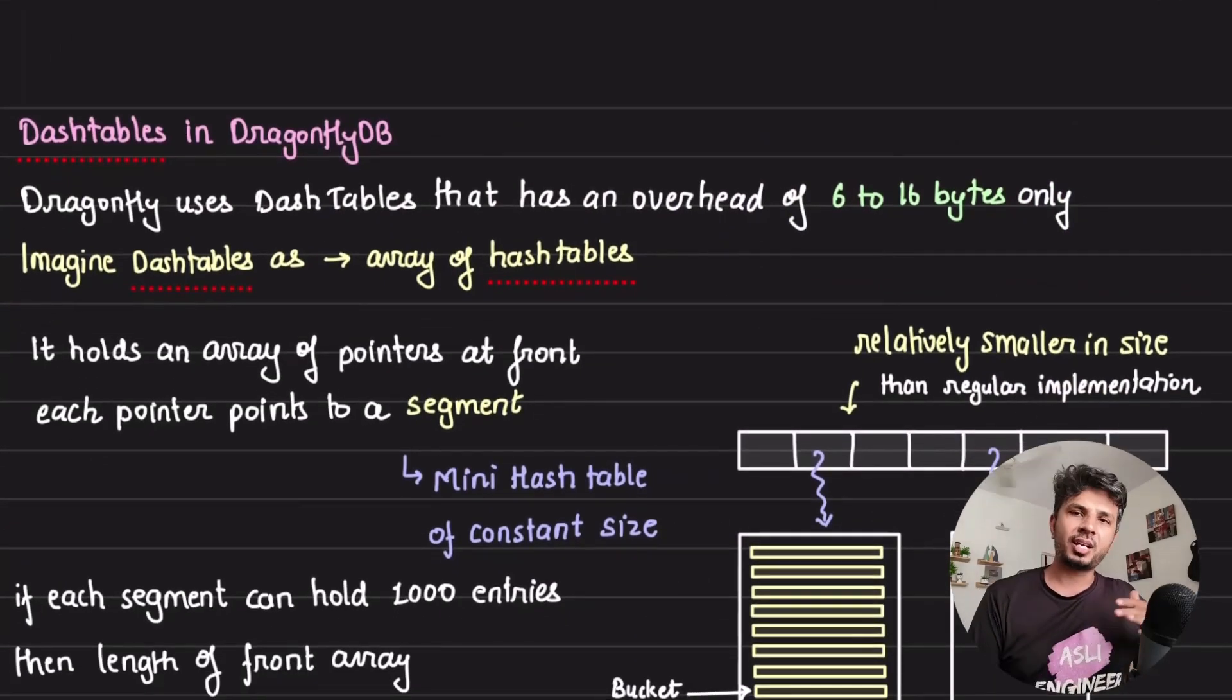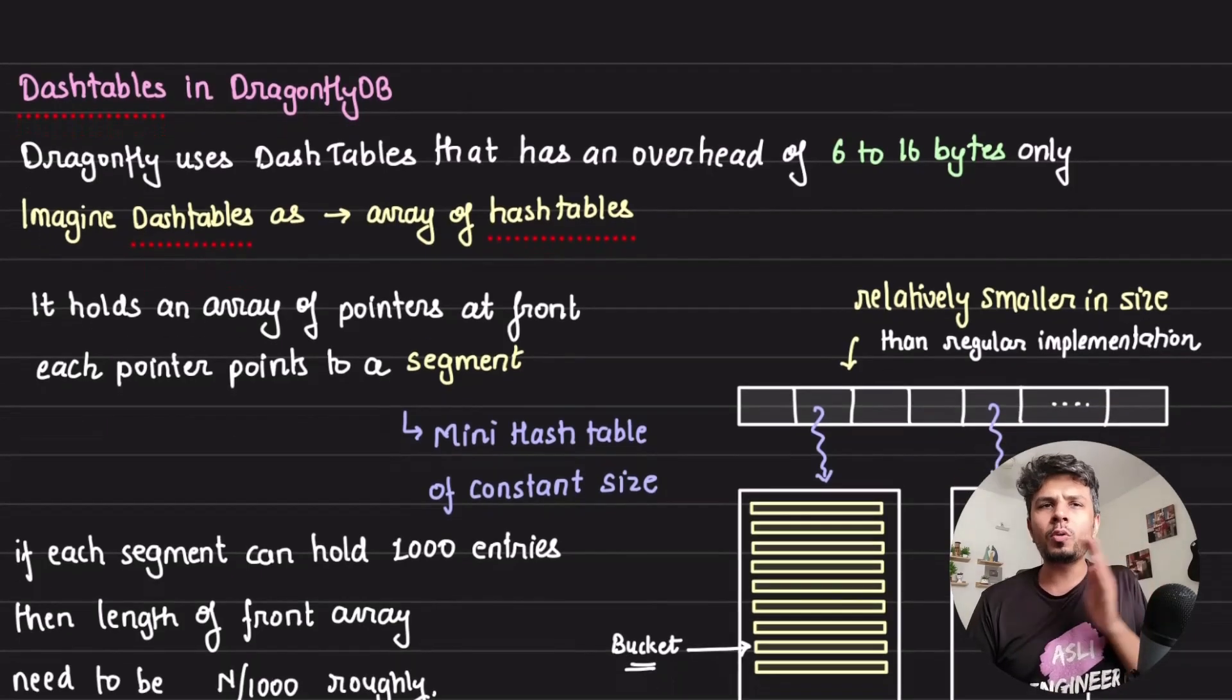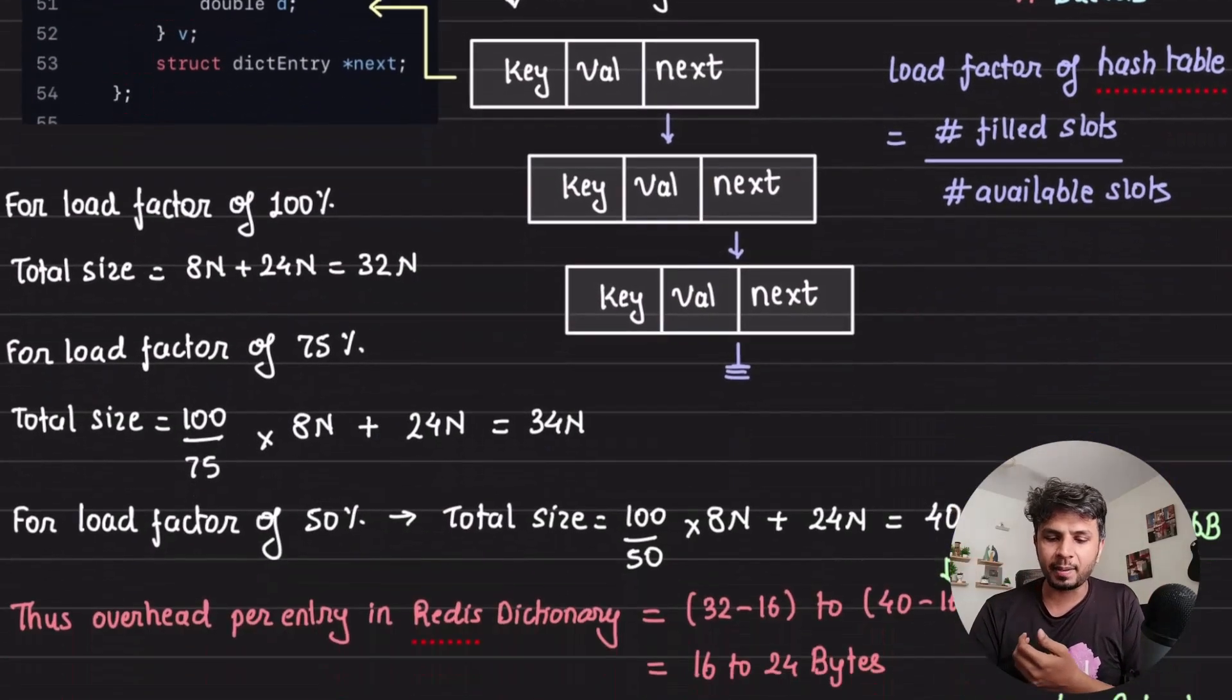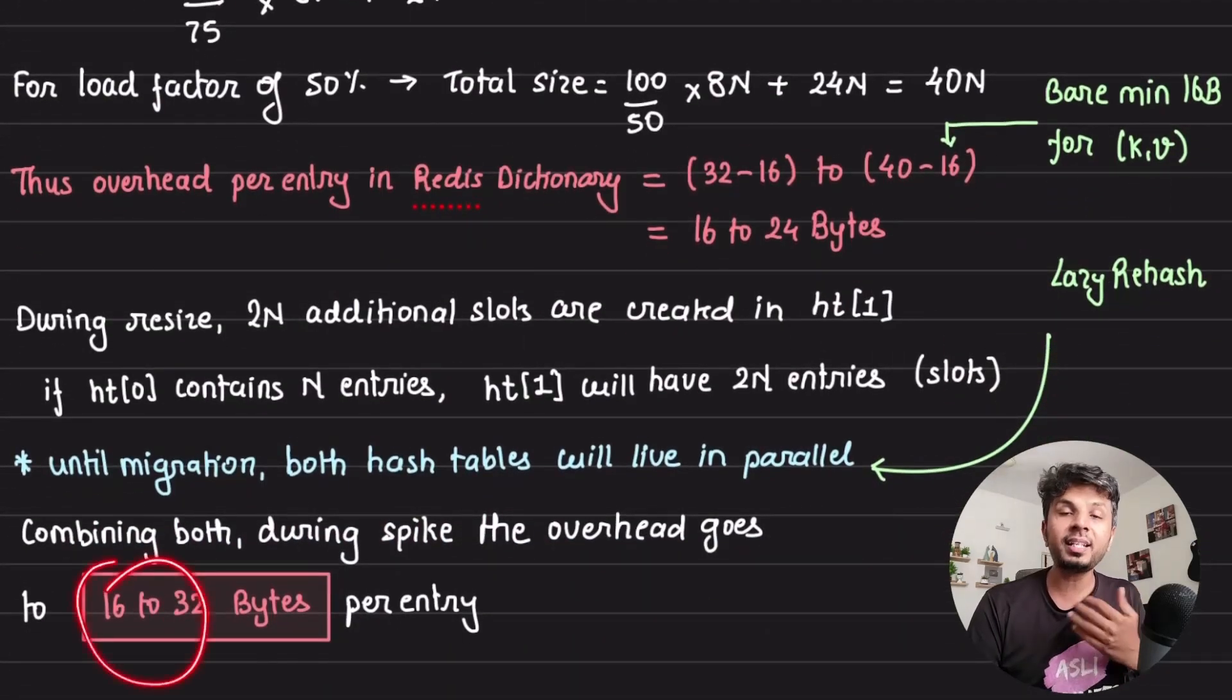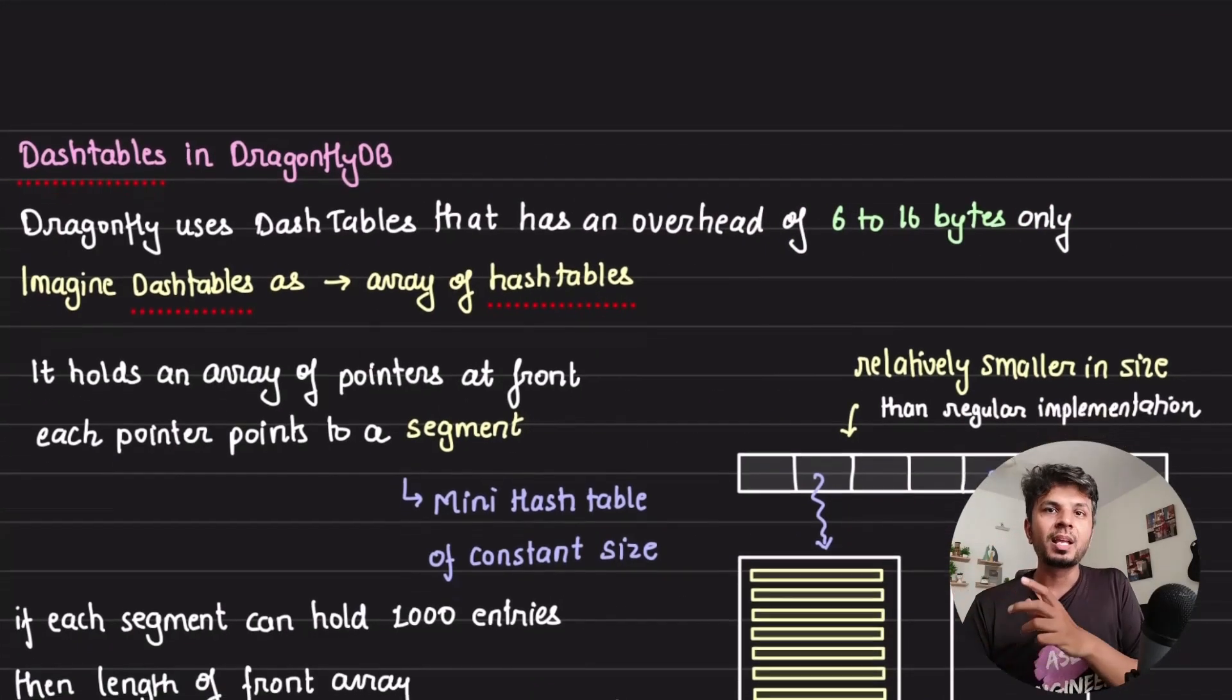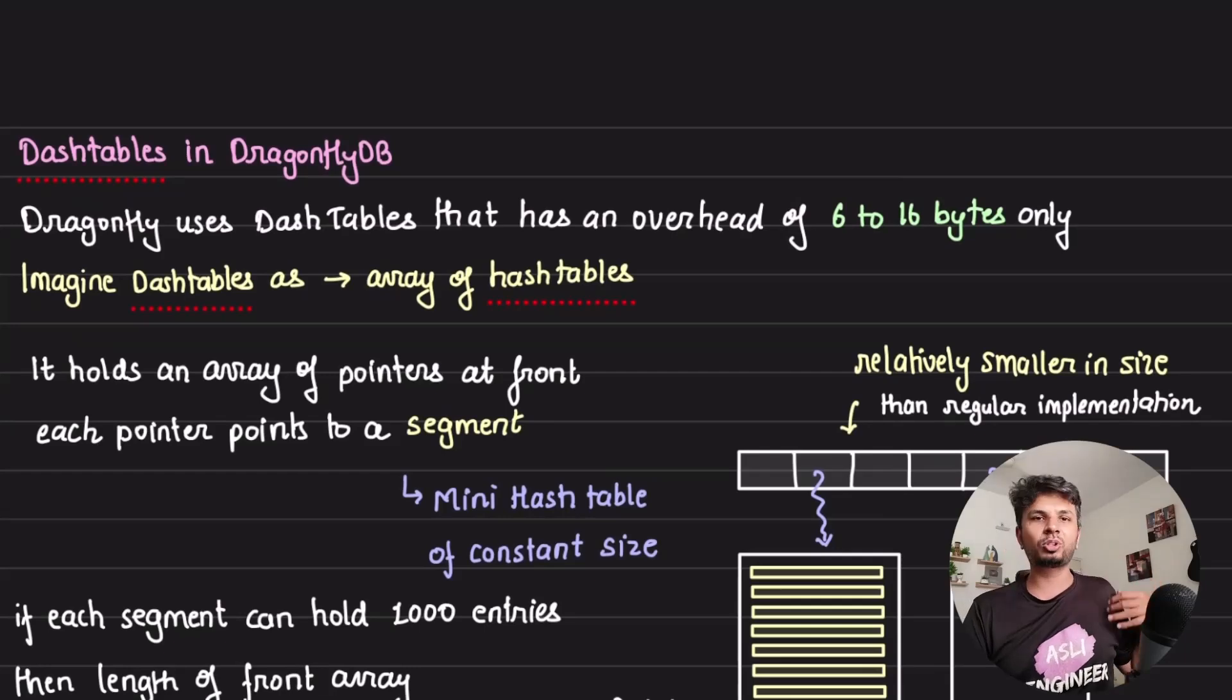Now let's understand what DragonflyDB does. They use something called dash tables. The overhead of dash tables is 6 to 16 bytes only as compared to what we observe at 16 to 32 bytes per entry. 6 to 16 bytes versus 16 to 32 bytes, pretty stark difference.